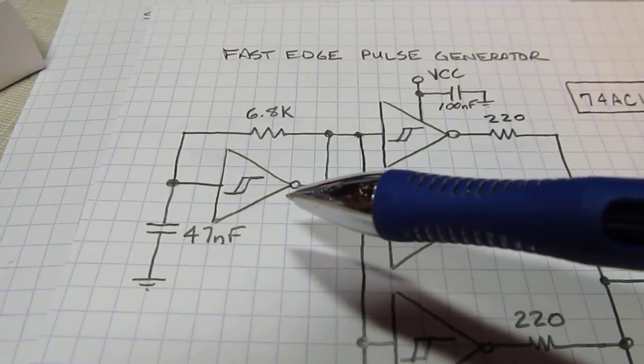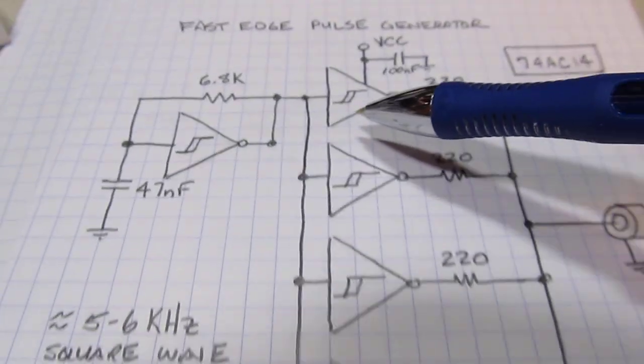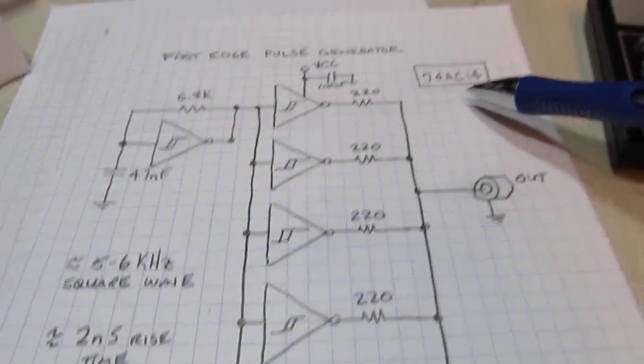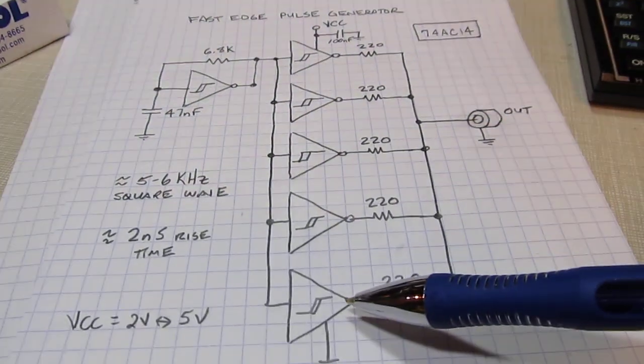This is just creating a square wave or near square wave at about six kilohertz. That goes into the input of the remaining five inverters that are in that same package of this device. They're all essentially running in parallel.